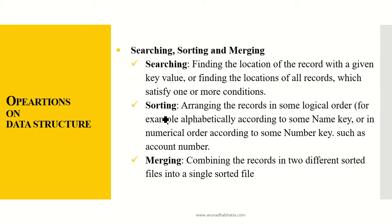Sorting means arranging records in some logical order — for example, alphabetically according to a name key, or in numerical order according to a number key such as an account number. We usually have a class of students sorted by roll number from 1 to 60 or 70, whatever the class strength. For searching, we will study linear search and binary search. For sorting, we will cover sequential sort, insertion sort, merge sort, quick sort, radix sort, bucket sort, merge radix sort, and hashing.